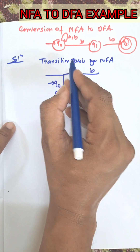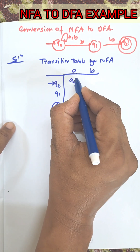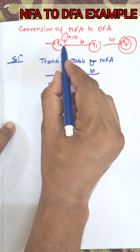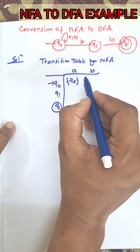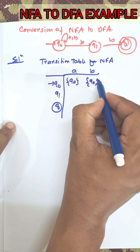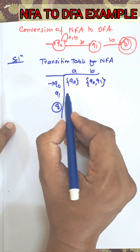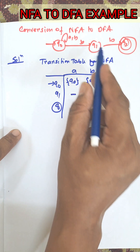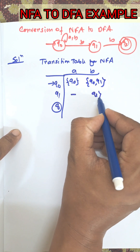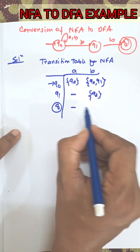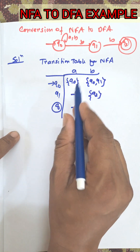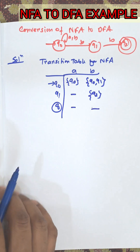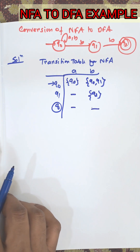From Q0 on input A, the output is Q0. From Q0 on input B, the output is Q0 and Q1. Now from Q1 on input A, there is no output. From Q1 on input B, there is Q2. From Q2 on input A, there is no output, and from B, no output. So this is the transition table for NFA.